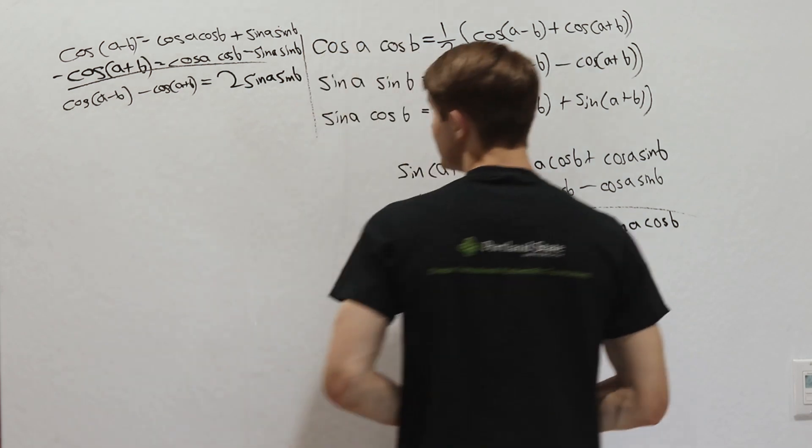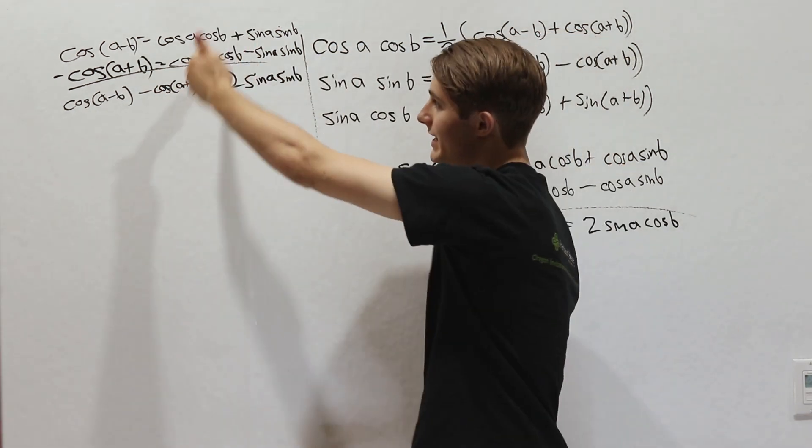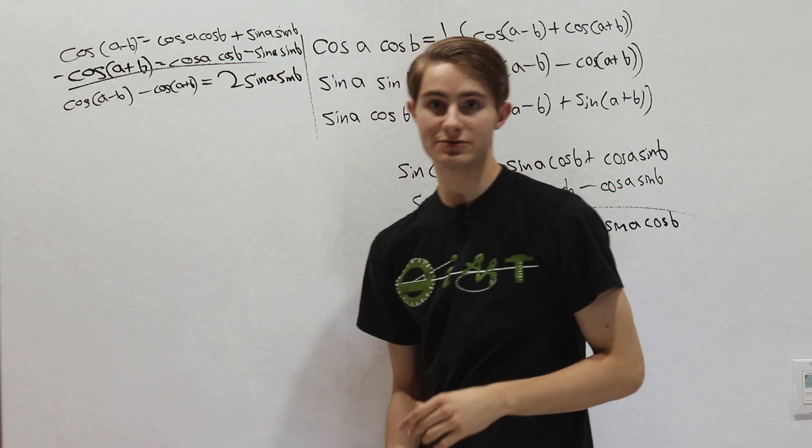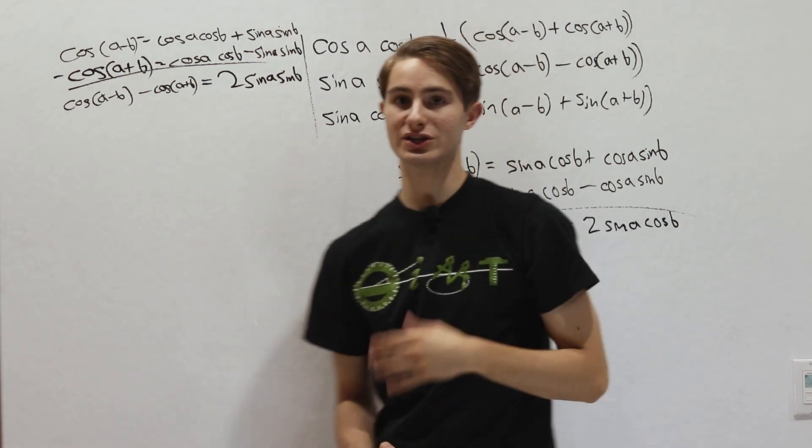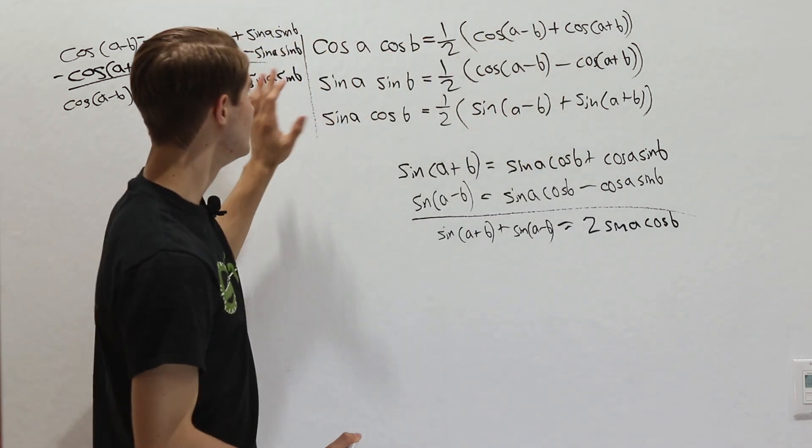So using the angle sum identities just like this, and adding the a plus b and a minus b versions, so that each part of the equation cancels out, we can get these three identities.